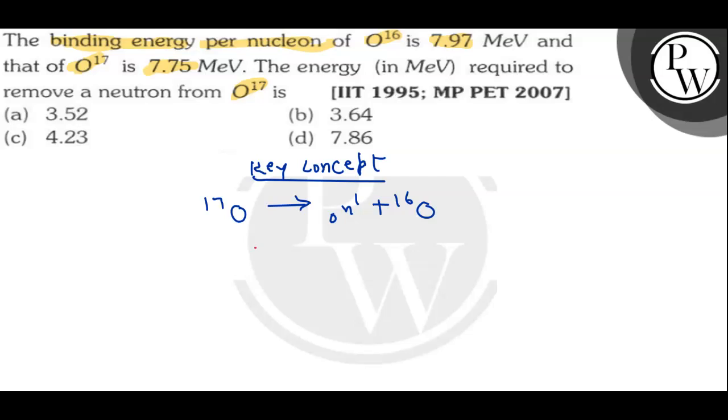Now how can we calculate the energy? Energy released can be easily calculated with the help of energy of reactant minus product. We have to calculate the energy of neutron, so in reactant there is O-17 and for product because we have to calculate the energy required for reactant and for product.